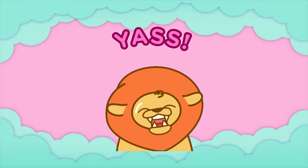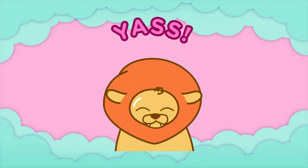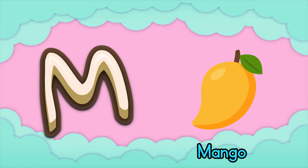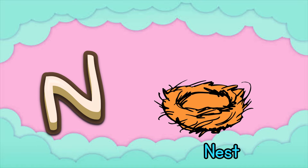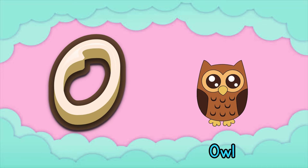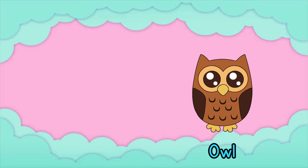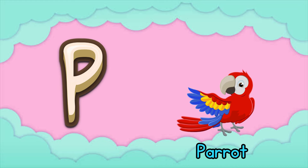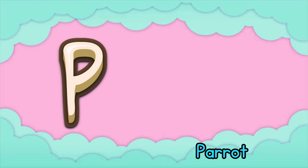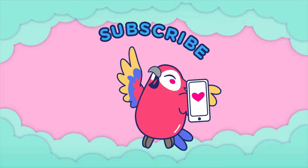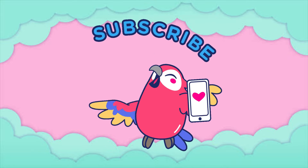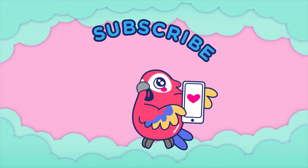M is for mango, m-m-mango. N is for nest, n-n-nest. O is for owl, ow-ow-owl. P is for parrot, p-p-parrot. Dum-dee-da-dum-dee-dum.